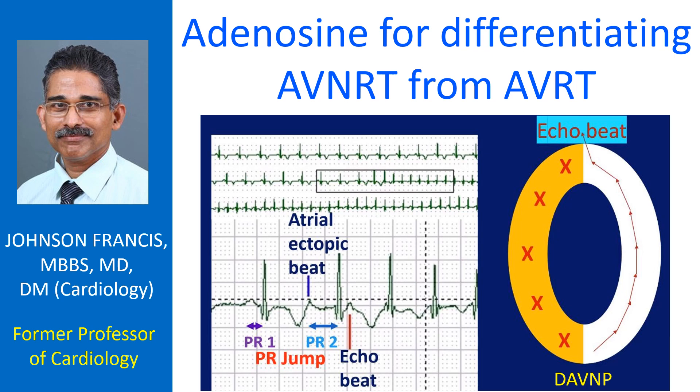Adenosine can induce a PR jump on surface ECG in those with AVNRT, which can be used to differentiate AVNRT from AVRT with concealed accessory pathway. In those with concealed accessory pathway, pre-excitation will not be manifest in the ECG as there is no anterograde conduction in that pathway in sinus rhythm — it takes part in the retrograde limb of reentry in AVRT.